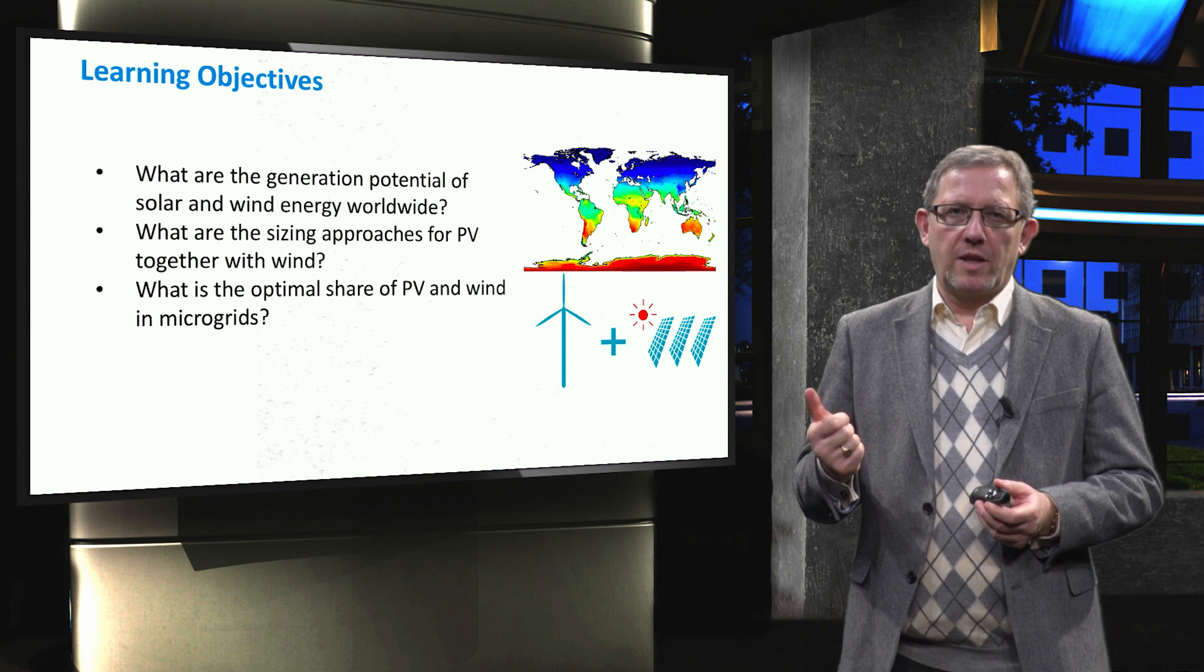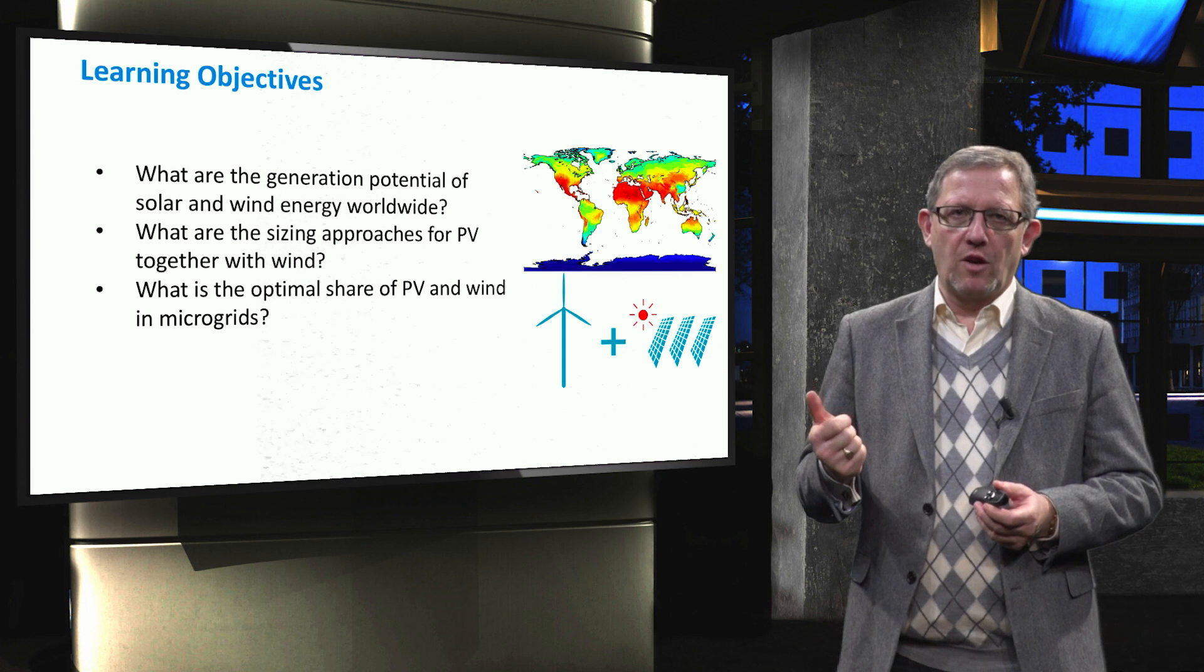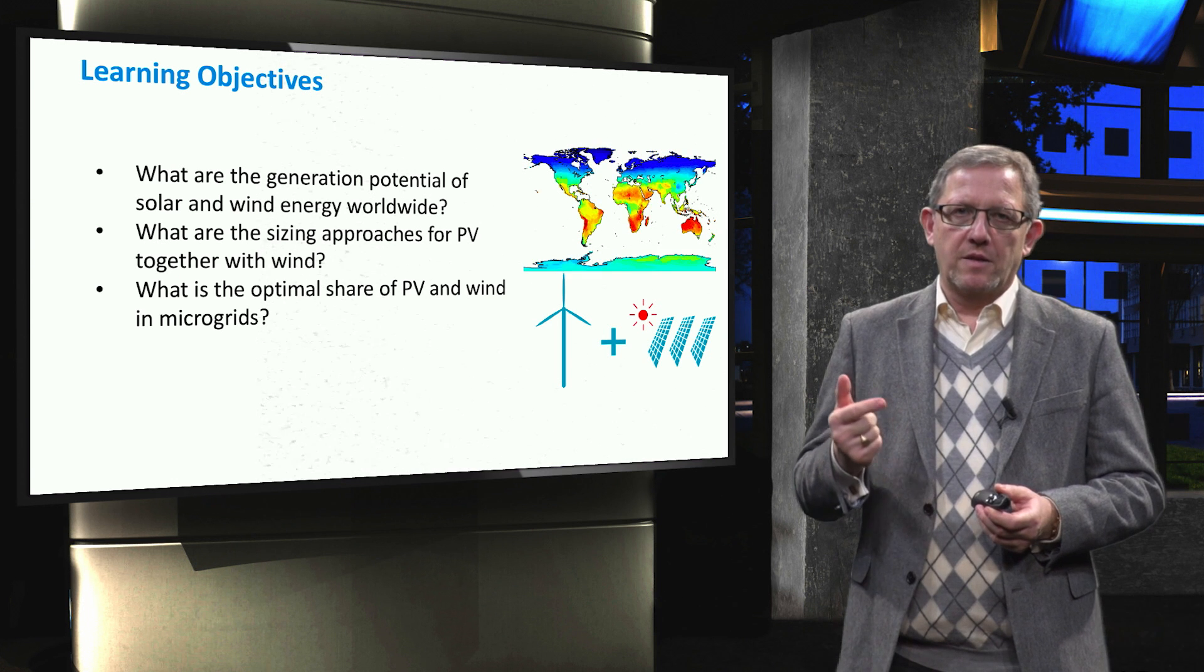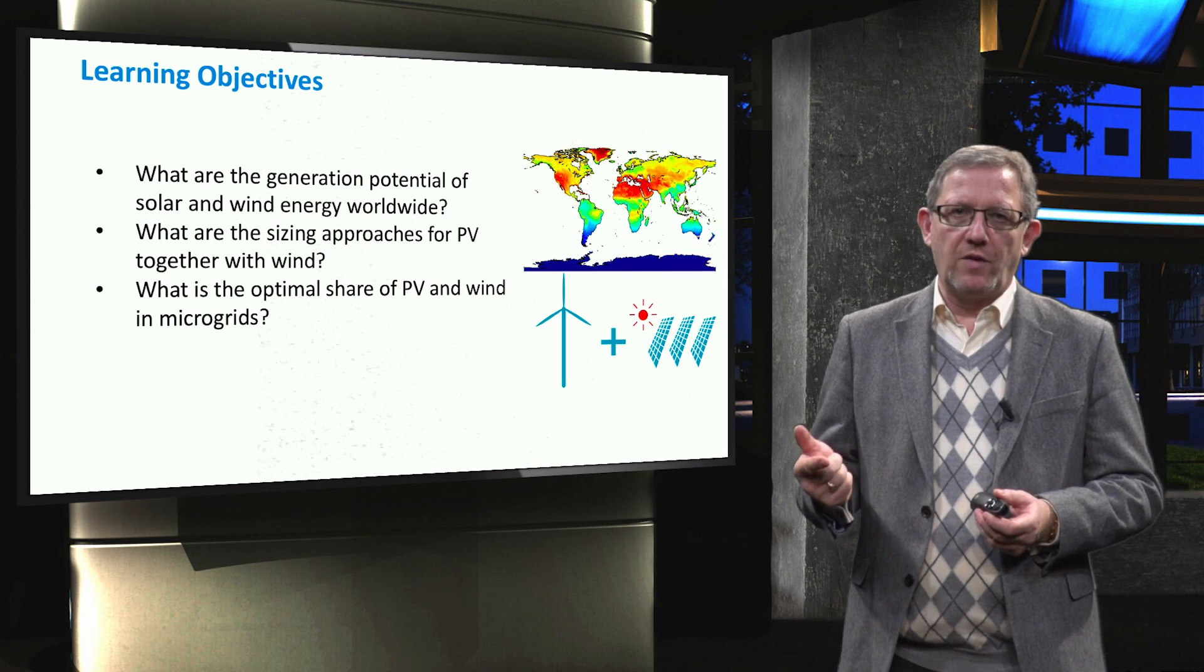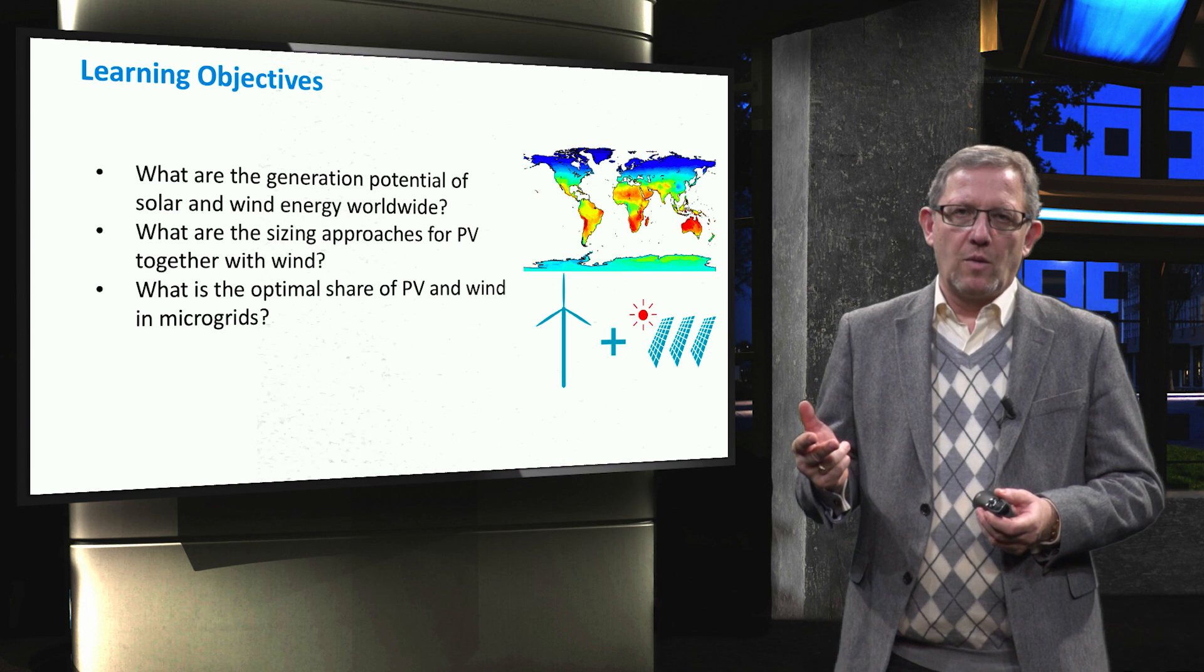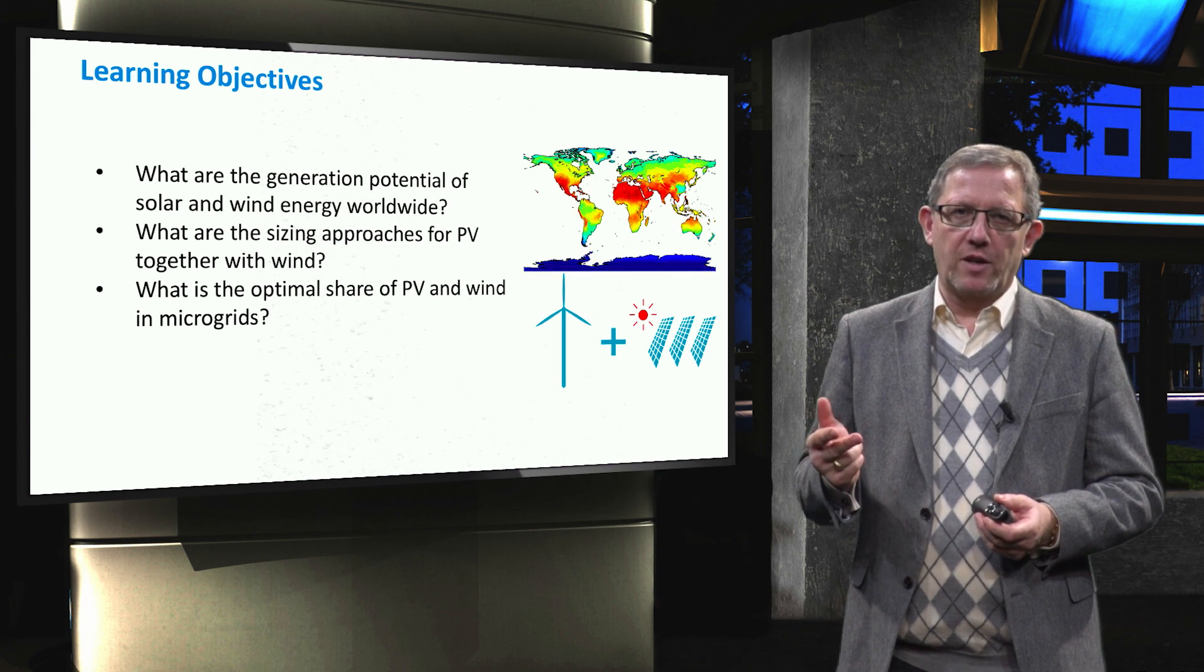First, what are the generator potential of solar and wind energy worldwide? Second, what are the sizing approaches for photovoltaics together with wind? And third, what is the optimal share of photovoltaics and wind in microgrids?